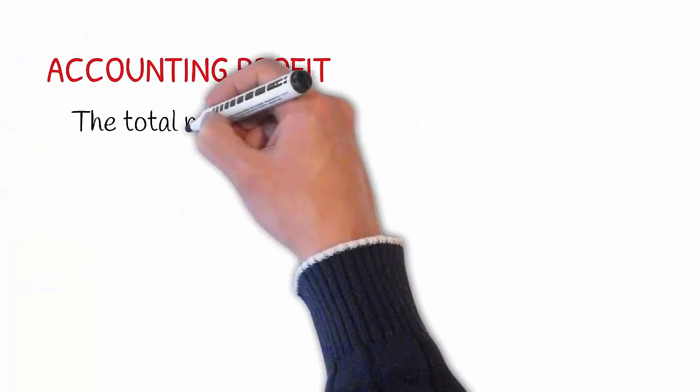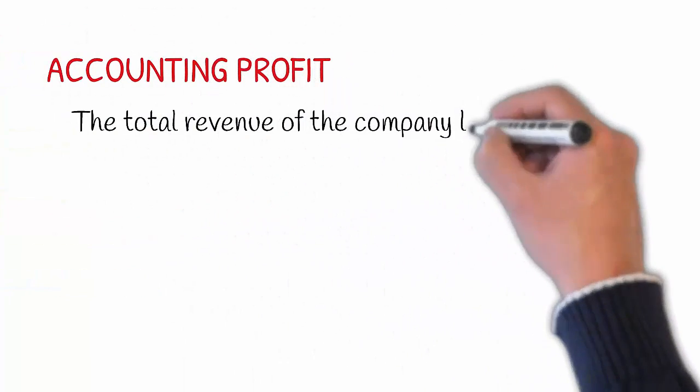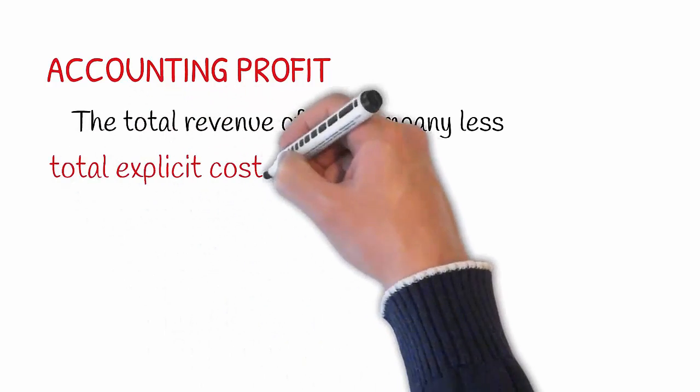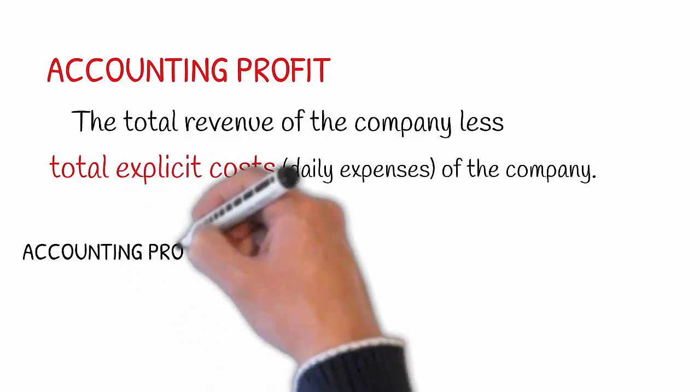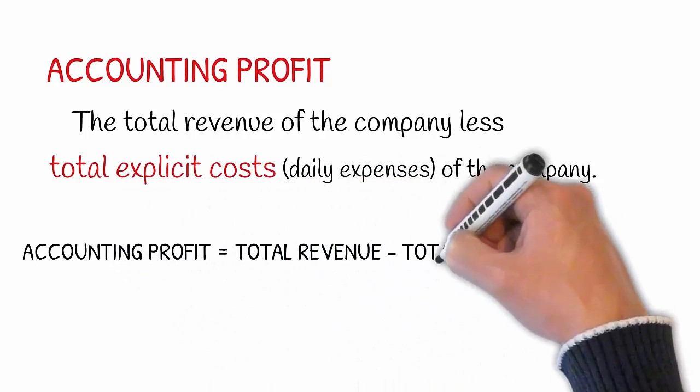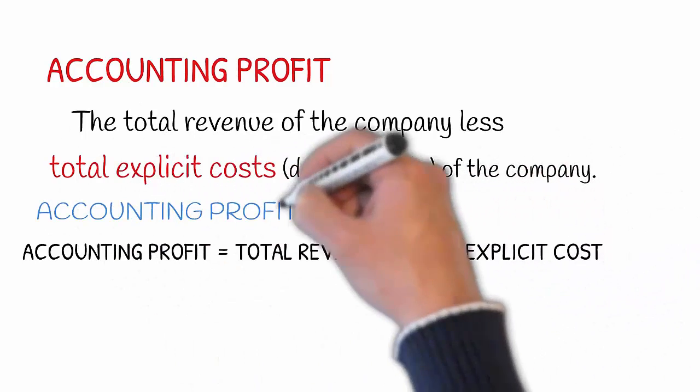In simple words, accounting profit consists of total revenue minus total explicit costs. In simple mathematical formula, accounting profit equals total revenue minus total explicit costs.